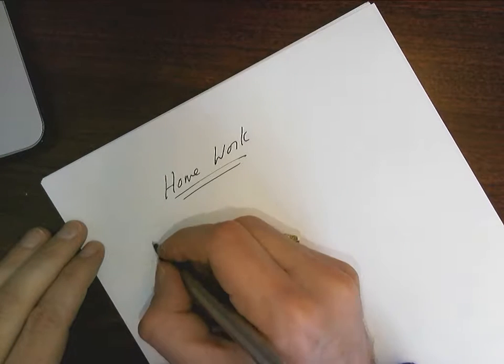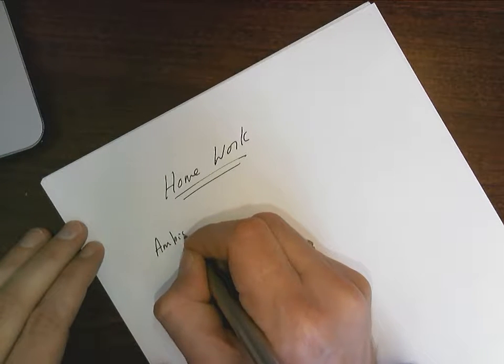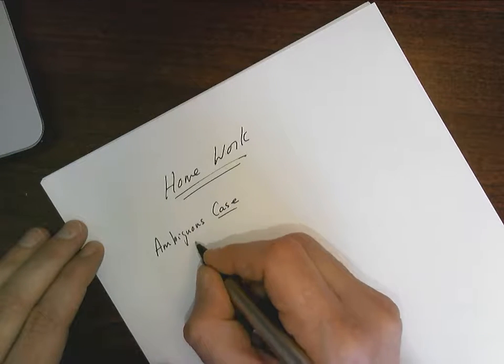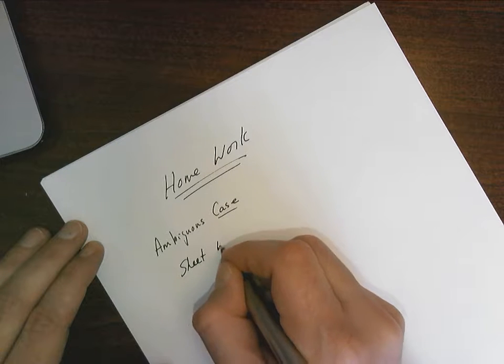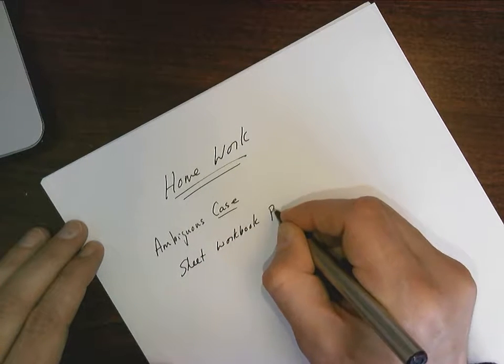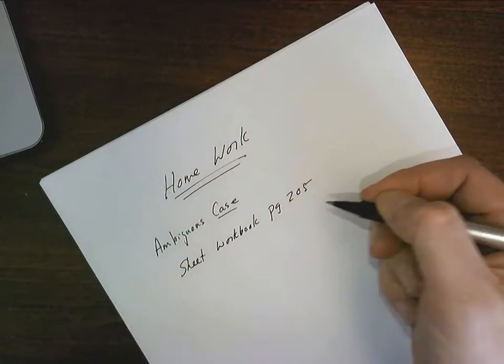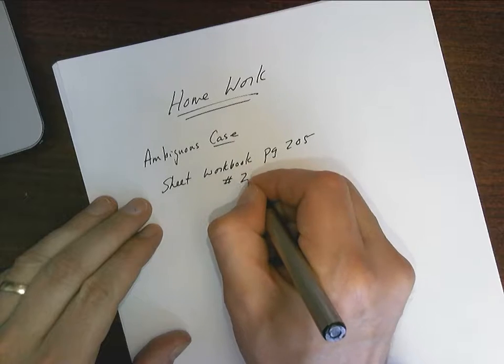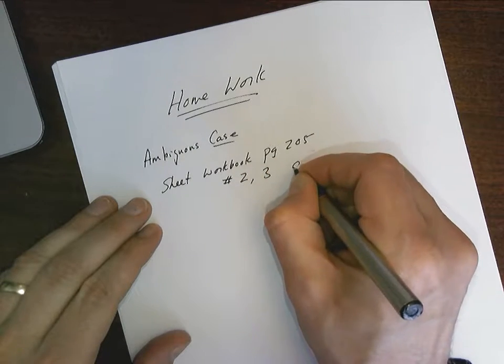So I'm looking for the ambiguous case. You're looking at a sheet, it's in your workbook, page 205. I want you to do and have complete number 2 and number 3, all of it.